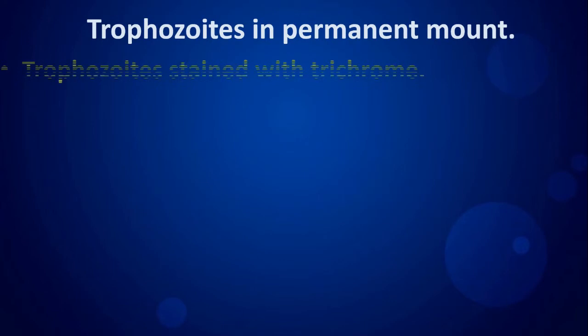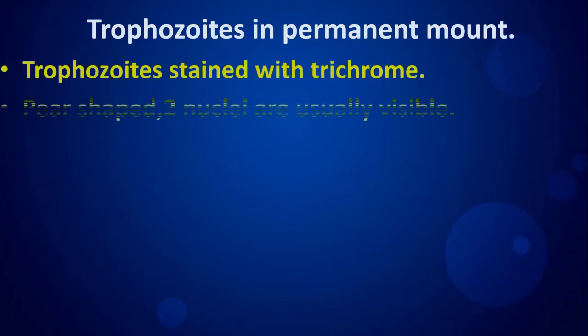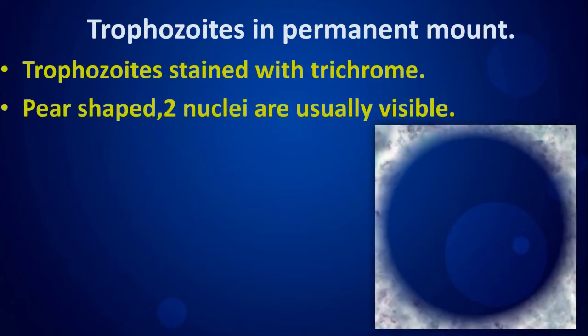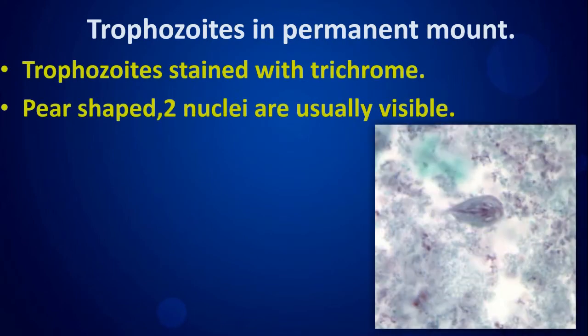Trophozoite permanent mount — trophozoite stained with trichrome. Pear shaped; two nuclei are usually visible.